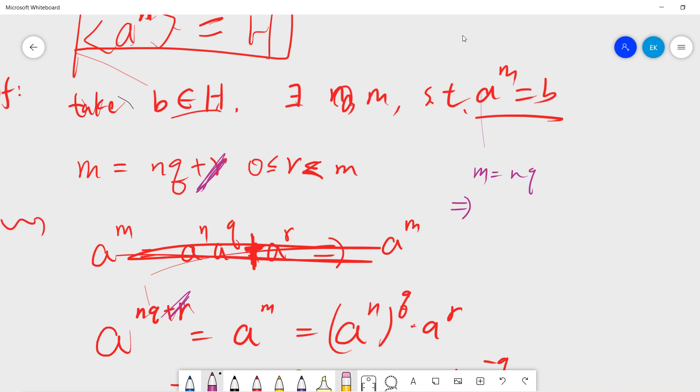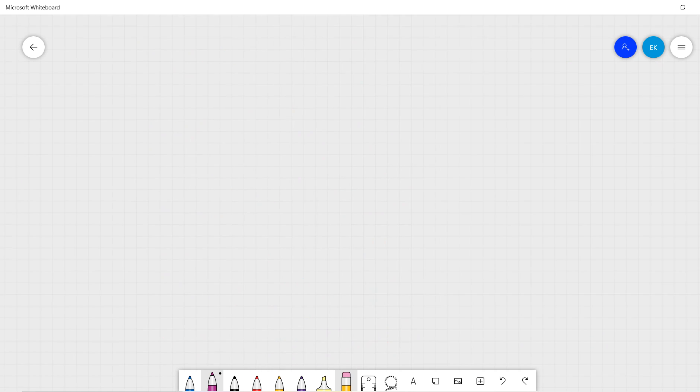This shows that when R equals 0, M equals Nq. So this proves that any B equals A to the Nq. So any B just be A^n to the power q. We prove our results. That's it.